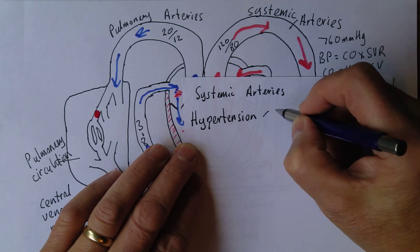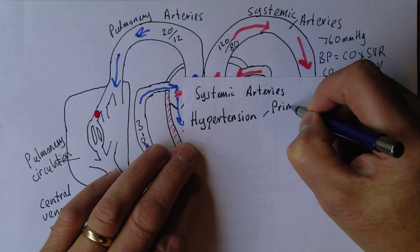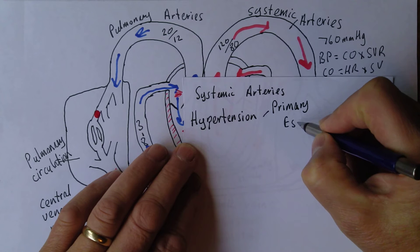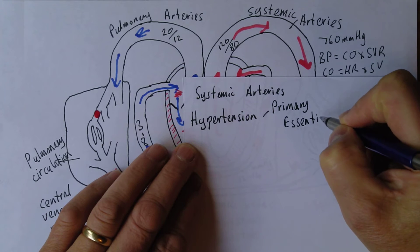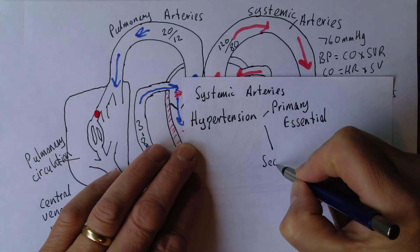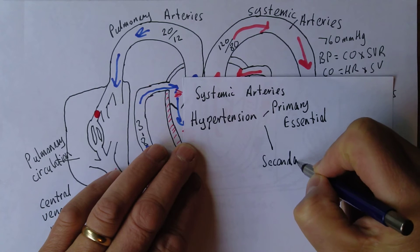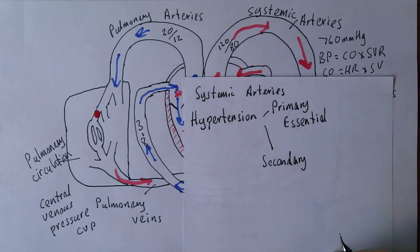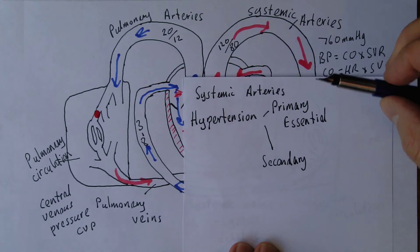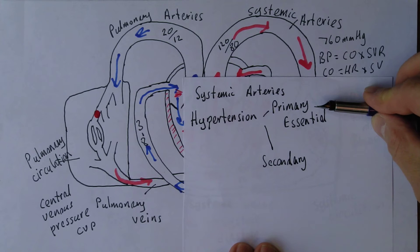Now this can be a primary, also called essential hypertension, or it can be secondary. This is the same with quite a few diseases. A secondary condition is one which is caused by something else, whereas a primary condition is one which just arises without apparent cause.